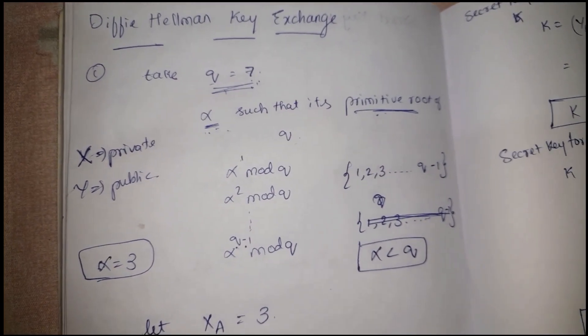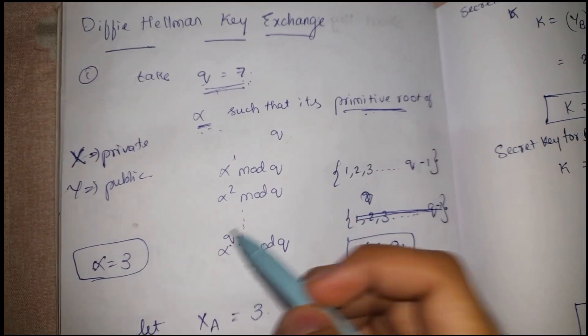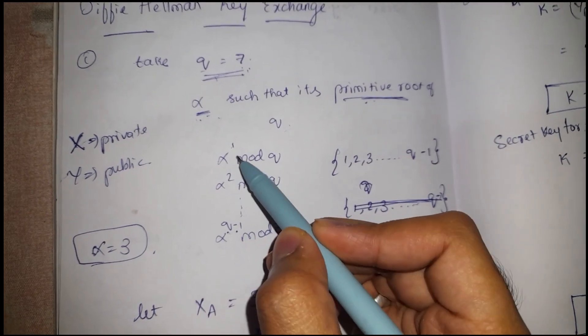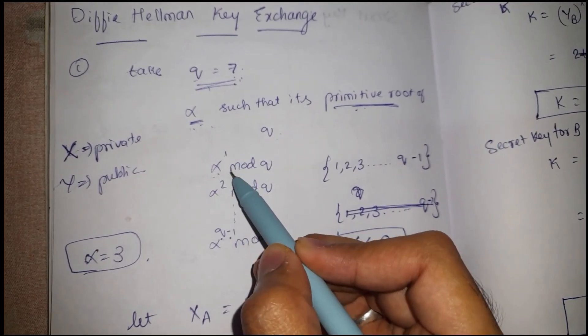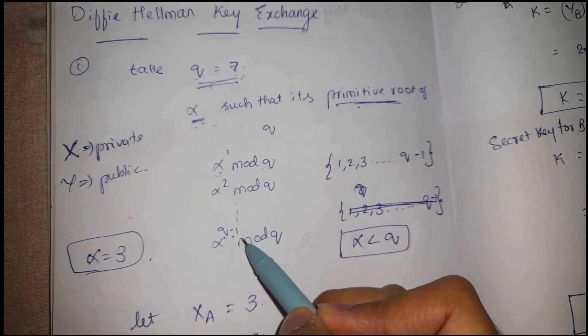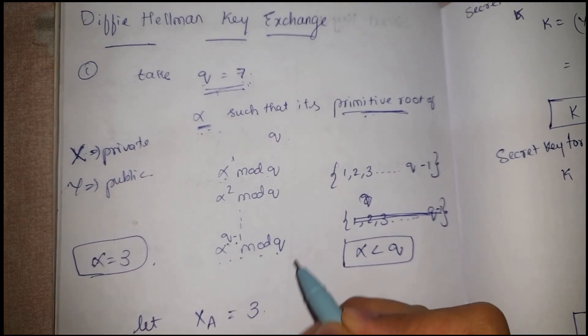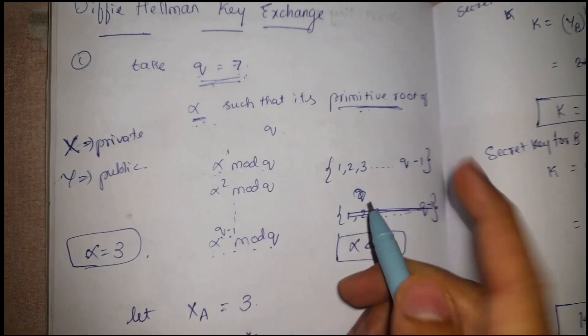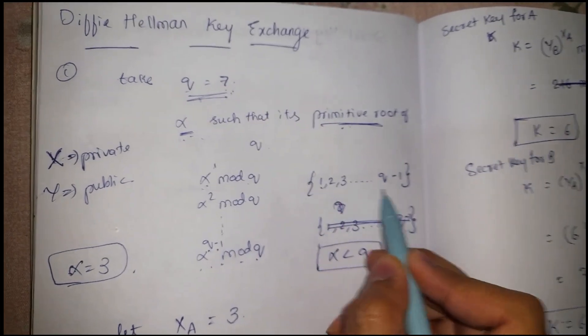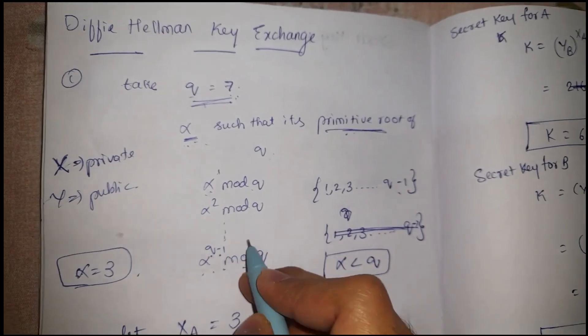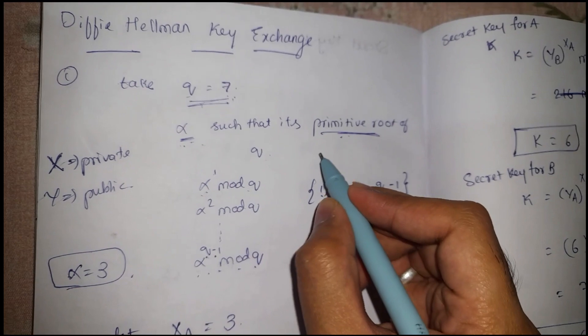What is primitive root? How can we find out the primitive root? We need to take a number alpha such that the operations alpha^1 mod q, alpha^2 mod q, so on up to alpha^(q-1) mod q will give a series of numbers between 1 to q-1.